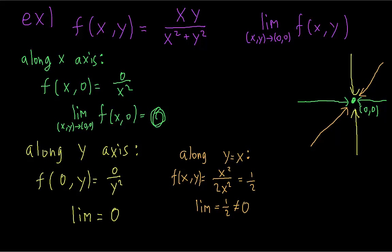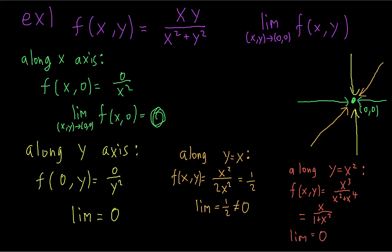Proving that a limit does not exist usually follows the same type of pattern — you keep trying different paths to approach the point. Oftentimes you'll start with the x-axis and the y-axis, and then you can choose different lines such as y equals x, or you can approach along a parabola. If we wanted to approach the point (0, 0) along the parabola y equals x squared, we replace all the y's in the function with x squared, and then divide by x squared in the top and bottom. The limit along this parabola is 0, agreeing with the first two limits we found. However, we already know that the limit does not exist because one path had a different limit.